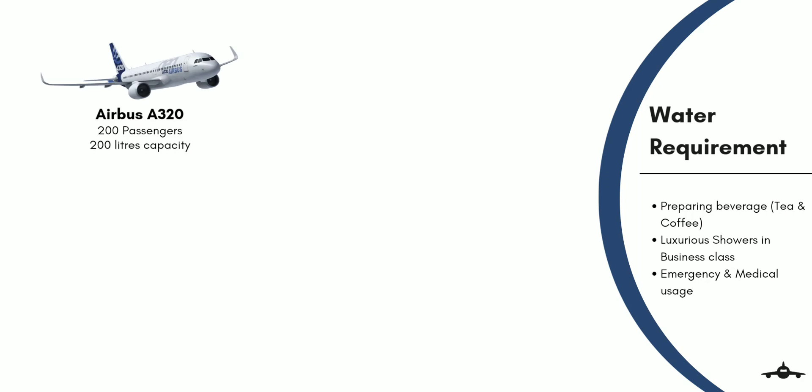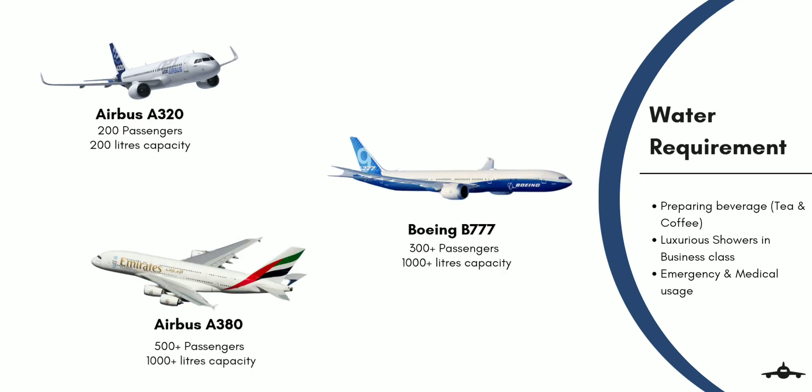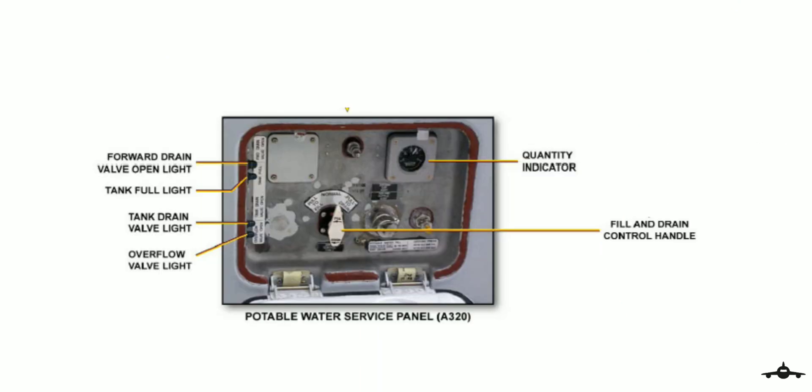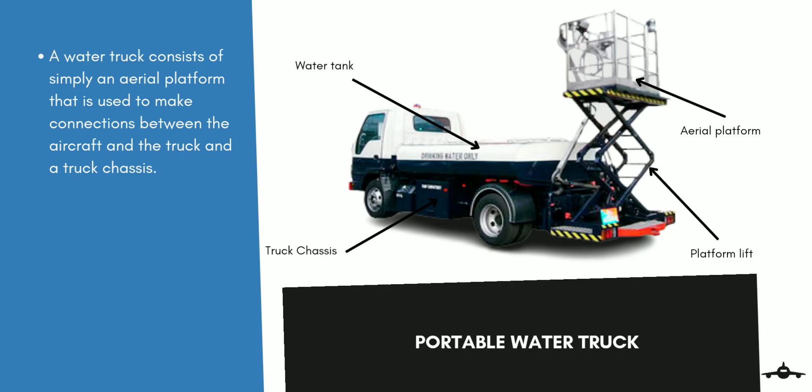Keeping the requirements in mind, a narrow body aircraft such as the A320 contains approximately 200 liters of water tank capacity, whereas wide body aircraft have more than 1000 liter capacity. All aircraft have water tanks fitted with a drain line, filling line, and an overflow line.